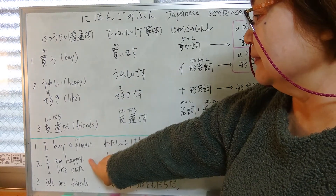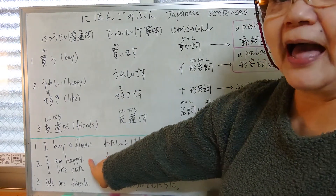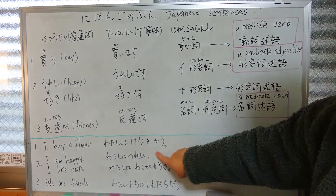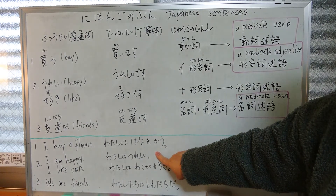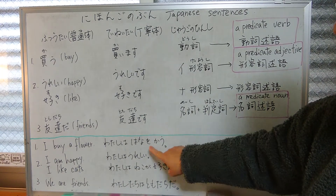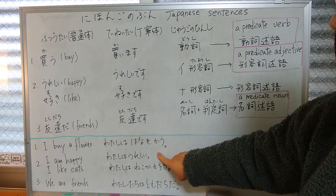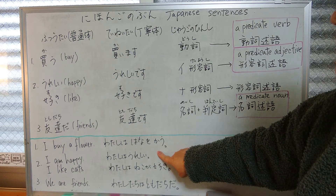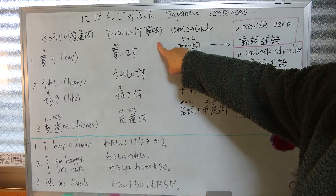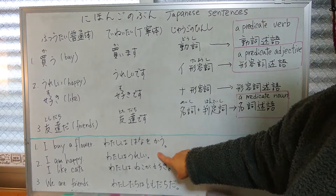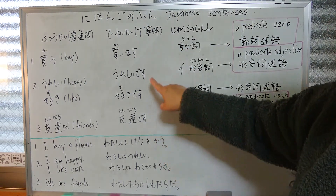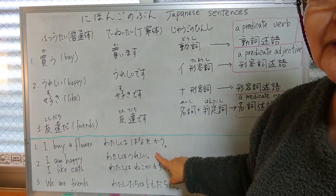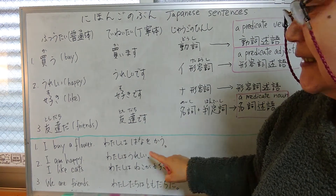Number two: 'I'm happy.' In Japanese: watashi wa ureshii — normal form. In polite form: watashi wa ureshii desu.